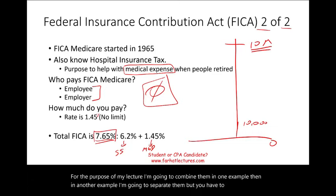For state and local taxes, in Pennsylvania there is a local tax — usually a flat rate of 1%, 2%, or 3%, and it differs by locality. On the paycheck, California state tax is $183.76. California also has SDI — state disability insurance. Each state will have different withholding requirements.